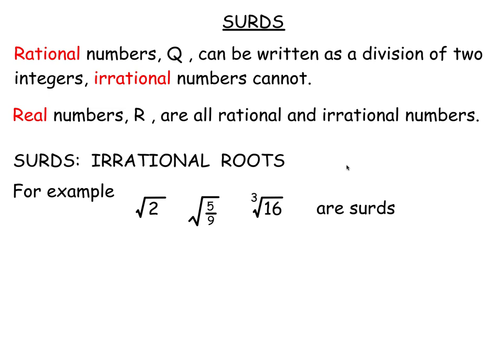So any root — square root, cube root, fourth root, whatever — which is irrational, that is it can't be written as a fraction or as a decimal, is called a surd.